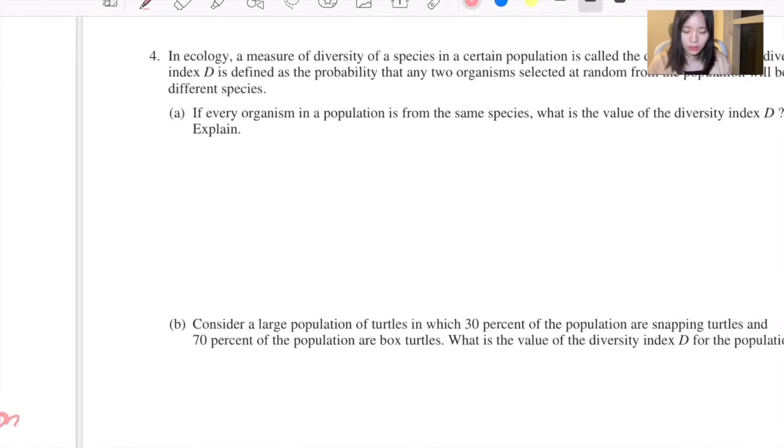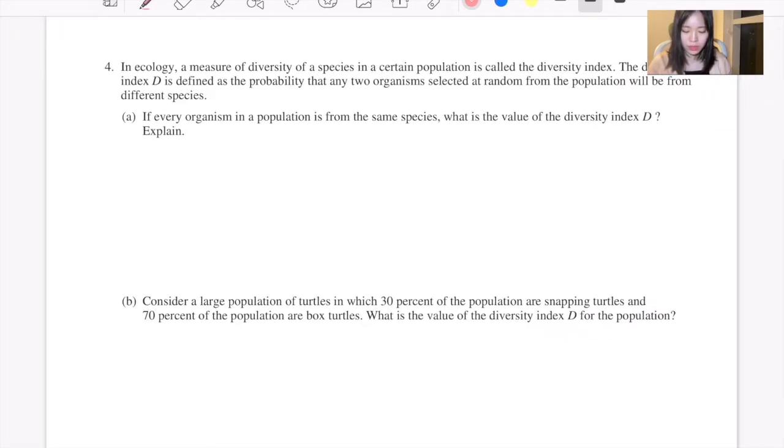Part A: If every organism in the population is from the same species, what is the value of the diversity index D? Explain.